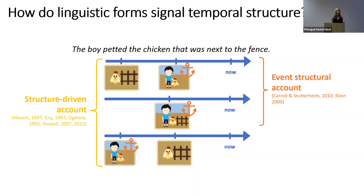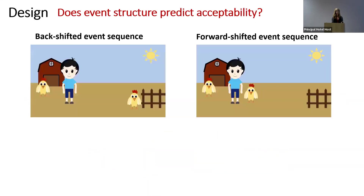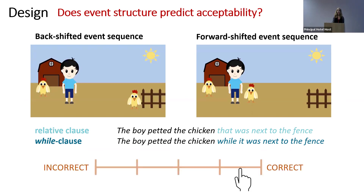To tease these two accounts apart, we have to ask: does the forward-shifted temporal order reflect how people interpret past-and-past relative clauses? We investigated this in 14 experiments following a general design. Participants were shown one of two event sequences, then given a relative clause description or, in a control condition, a 'while' clause description, and asked to rate how well the linguistic description matched the previously seen event sequence.